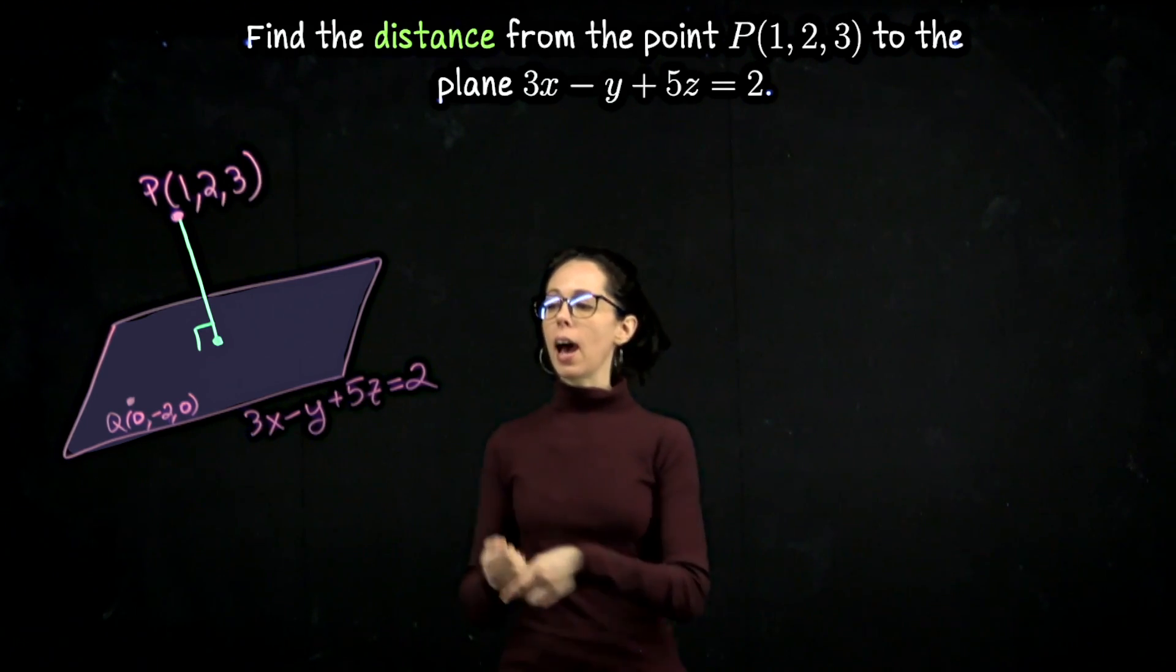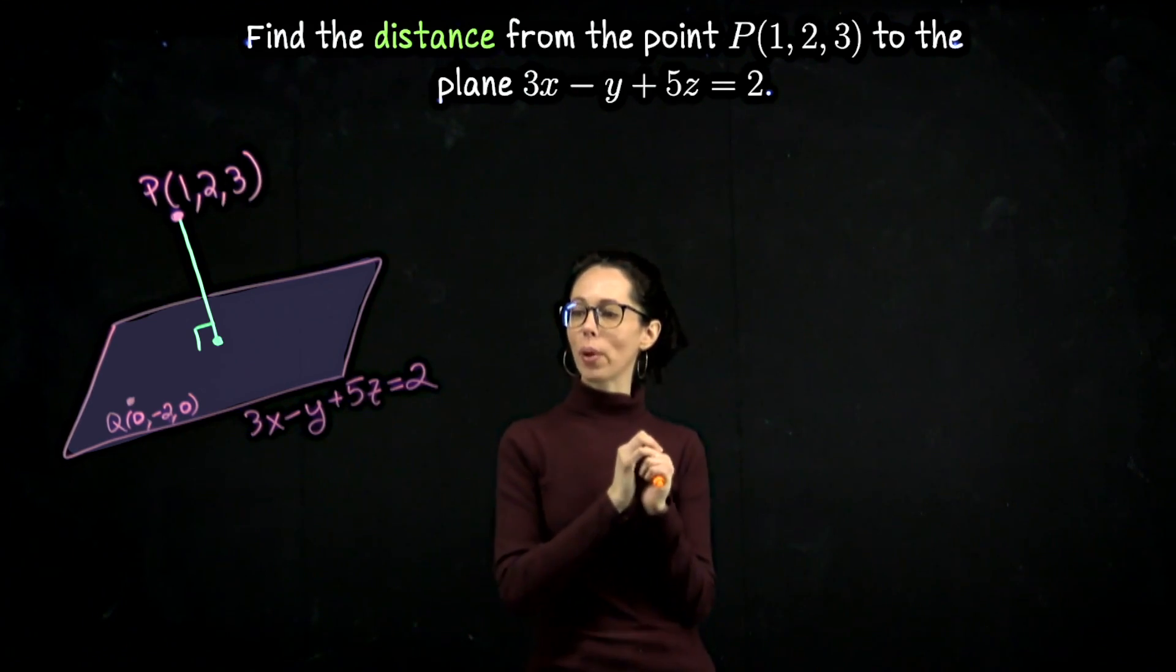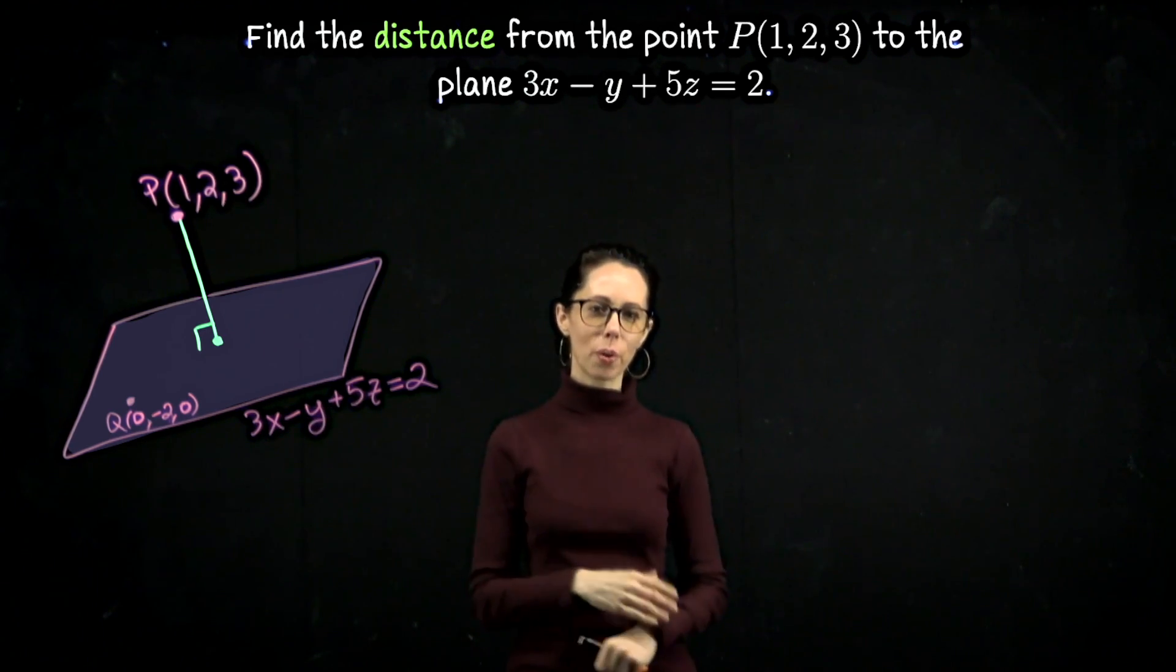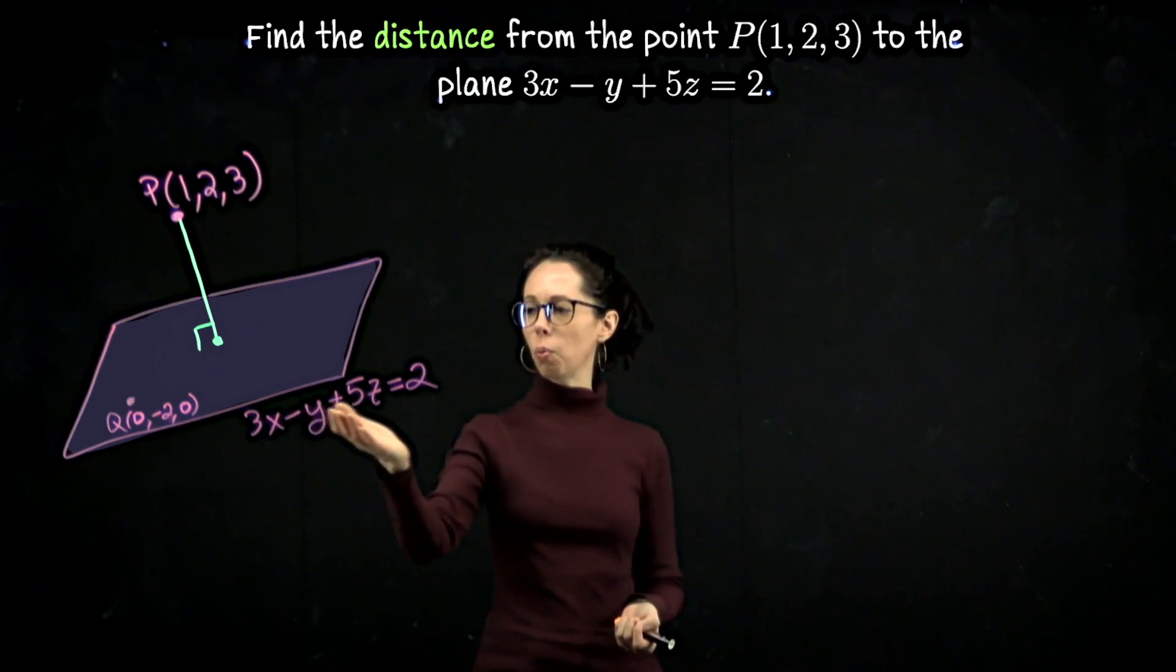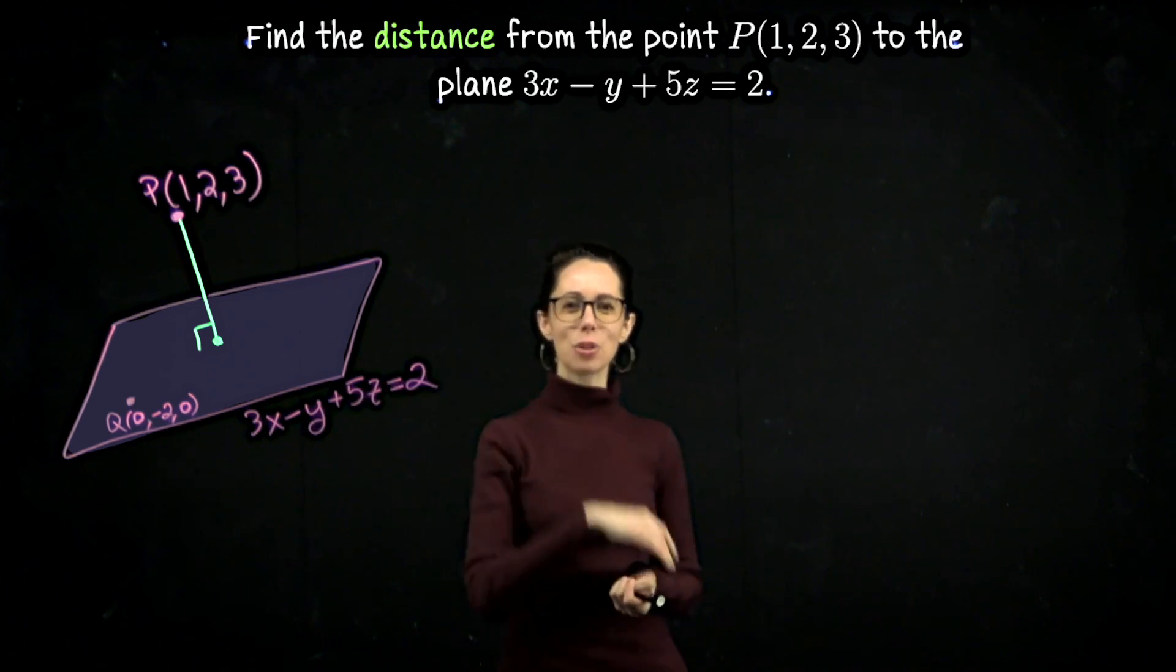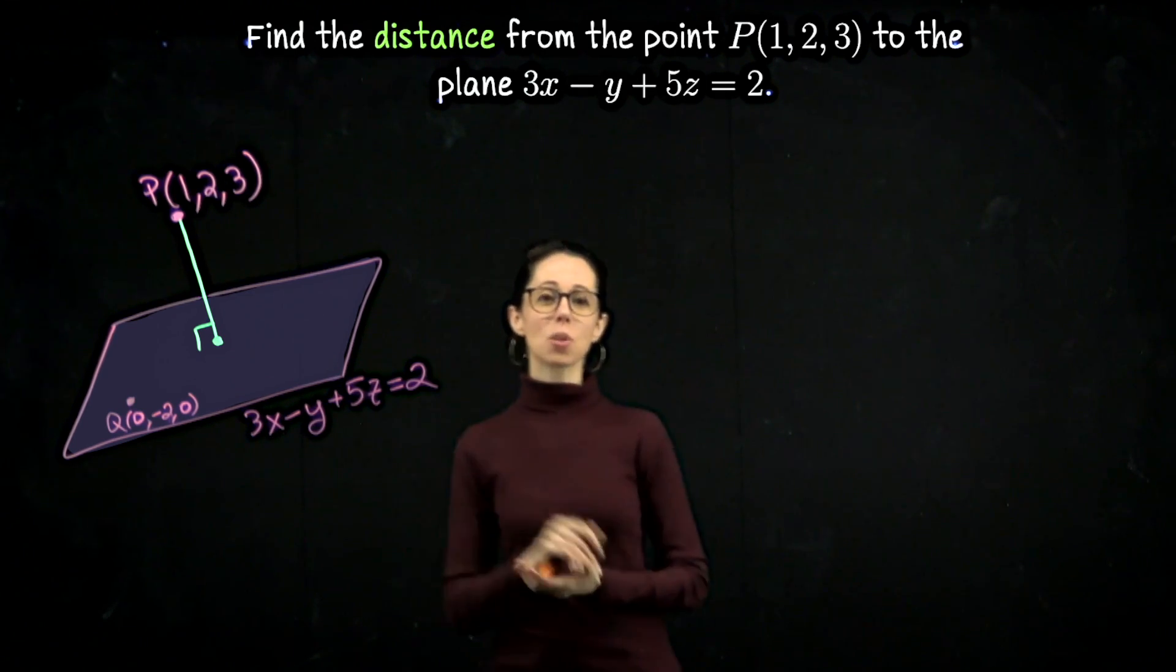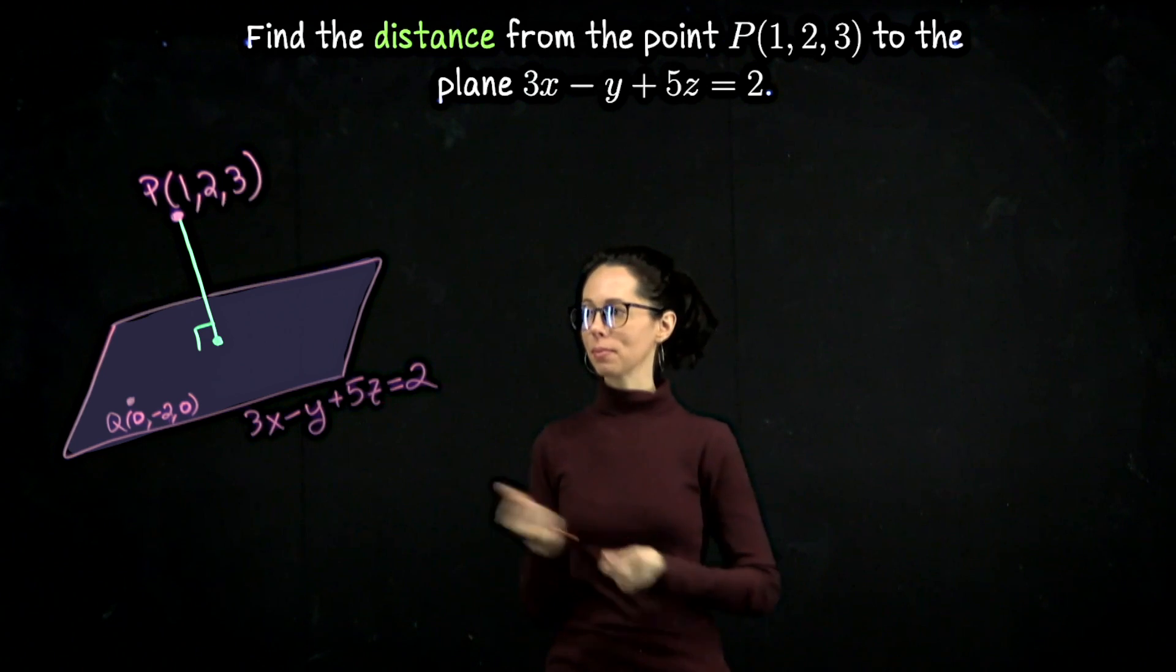Here are some other options. I could zero out y and z and say, let's use the point (2/3, 0, 0), or (0, 0, 2/5). Those are two other options where I've zeroed out two coordinates. Or you could do something different like (1, 1, 6). So 3 + 5 - 6 = 2. Yes, that's right. So you just need to find a triple of values x, y, and z that makes this equation true, and you found a point that lives on the plane. Any of them will work for this computation.